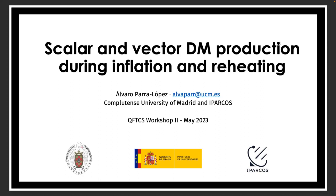Today I want to tell you a bit about how gravitational production can explain the observed abundance of dark matter. We will focus on a scalar and a vector dark matter field.